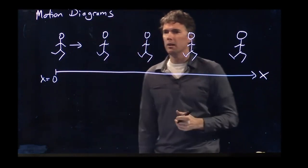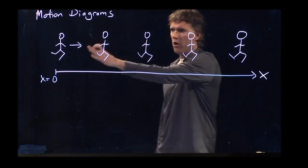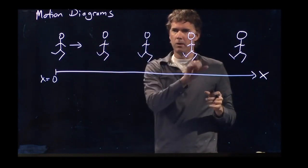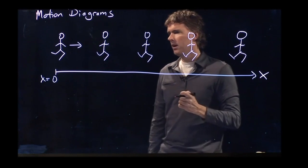and so the person is maybe increasing their speed. If all the deltas were exactly the same, the spacing was exactly the same, then we would say constant speed.